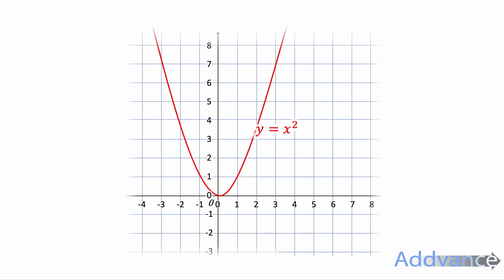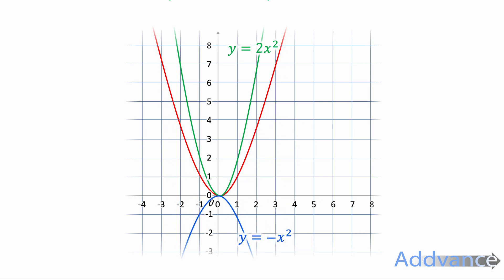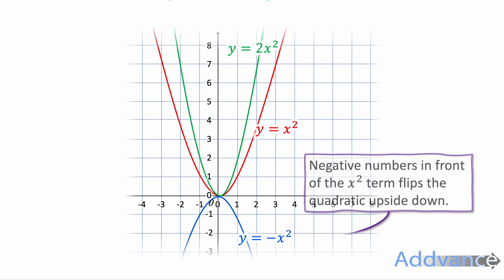Y equals x squared looks like this. Y equals 2x squared is a steeper version of the same graph. And then we've also got y equals minus x squared, which is a flipped version of the same graph. If you have negative numbers in front of the x squared, it flips it upside down.